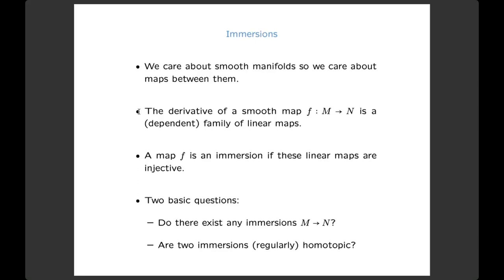If I want to understand manifolds, I should understand their maps, and part of that is understanding immersions. Natural questions arise: can I immerse M into N? There are famous results from the 1940s where Whitney and others studied these questions. Obviously there's a dimension restriction, but there's a much deeper theory. Then you can ask: when are two immersions homotopic? That's the sort of question you care about if you care about smooth manifolds.